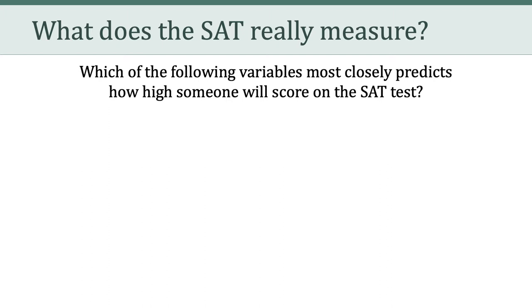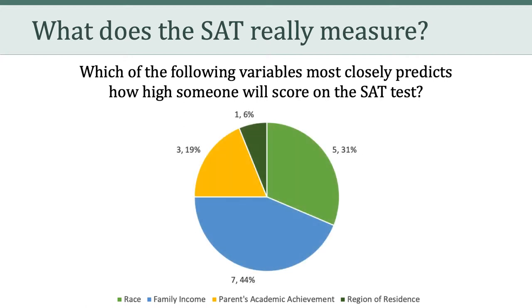That particular item on the quiz gets at the issue of what the SAT really measures. The item asked: which of the following variables most closely predicts how high someone will score on the SAT test? And of the four choices available — race, family income, parents' academic achievement, and region of residence — this is the distribution of how everyone in the class responded. The correct answer, of course, was family income, which about 44% of you got correct.